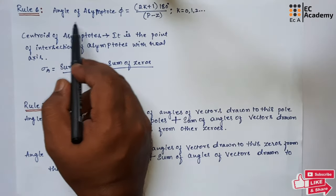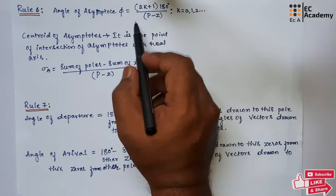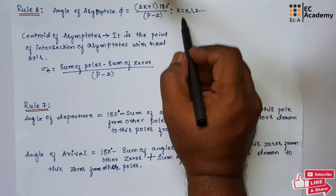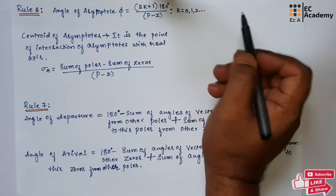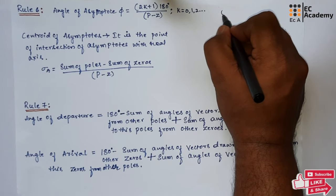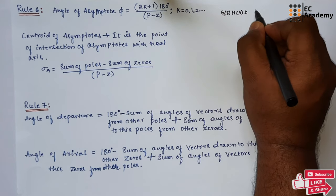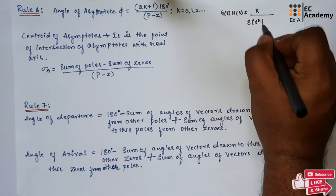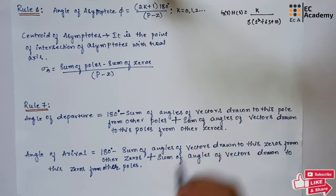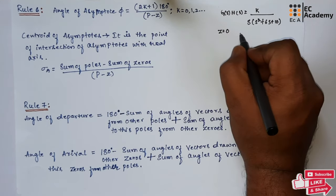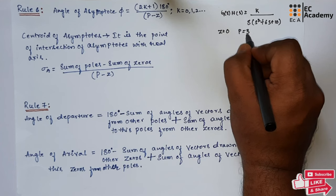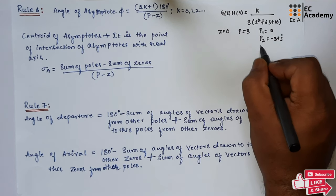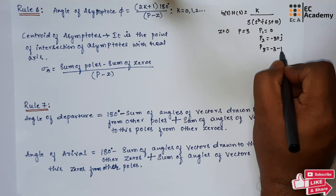Rule 6 is about angle of asymptotes, given as φ = (2K + 1) × 180° divided by (P − Z), where K = 0, 1, 2, 3, and so on. For example, take G(S)·H(S) = K divided by S(S² + 6S + 10). Here the number of zeros is 0 and there are 3 poles: pole 1 = 0, pole 2 = −3 + j, pole 3 = −3 − j.